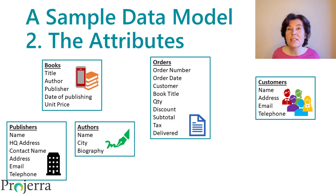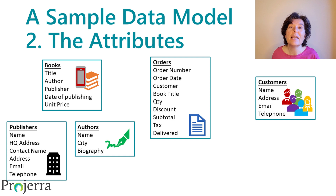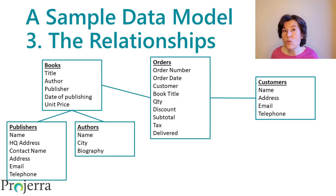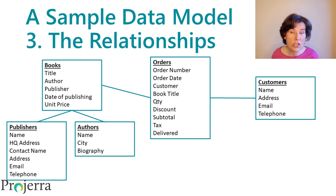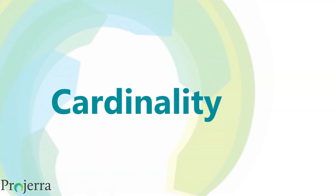After you have identified the objects and their attributes, it's time for the third component of the data model — those relationships. It's easy enough to draw lines between the objects to say that there is a relationship, but how do you describe that relationship? That's where we take a little detour to talk about cardinality.